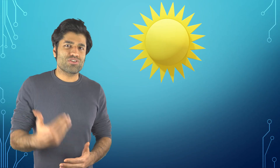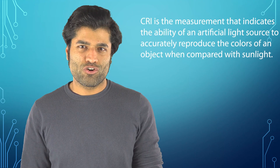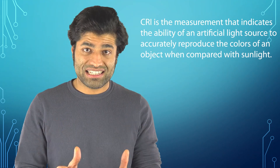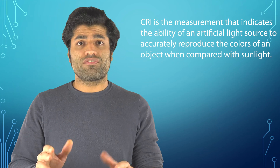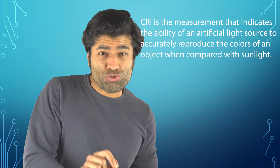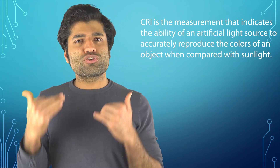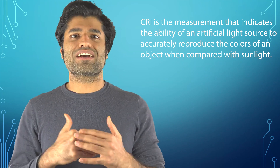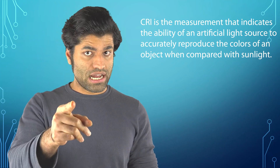The light source can either be natural, such as the sun, or artificial, such as a lamp. Therefore, CRI is a measurement that indicates the ability of an artificial light source to accurately reproduce the colors of an object when compared with sunlight.